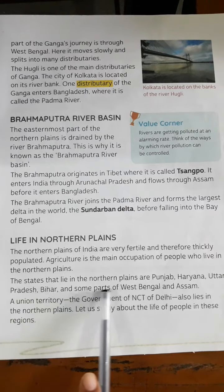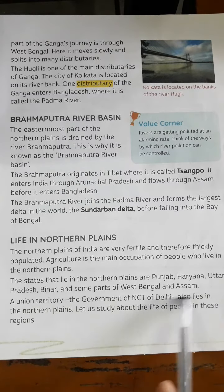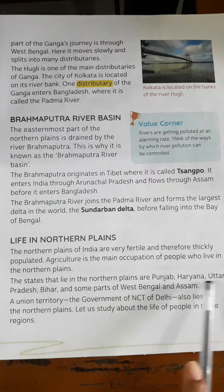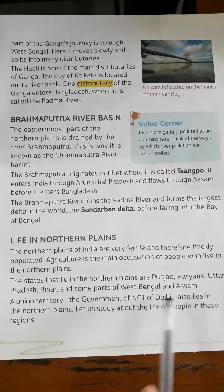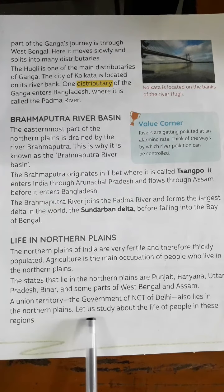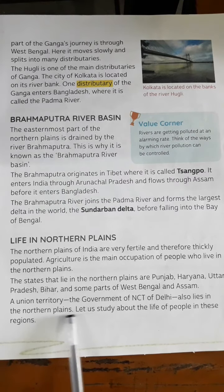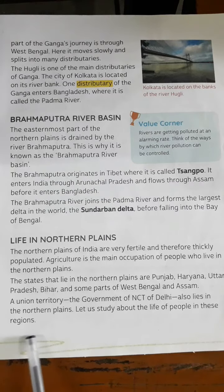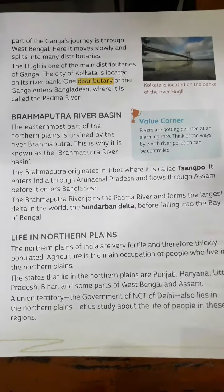The states that lie in the Northern Plains are Punjab, Haryana, Uttar Pradesh, Bihar, and some parts of West Bengal and Assam. The union territory of Delhi also lies in the Northern Plains. Let us study about the life of the people in these regions.